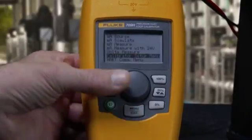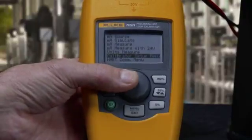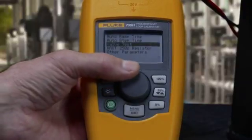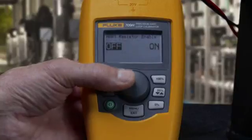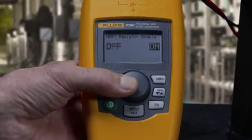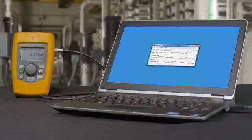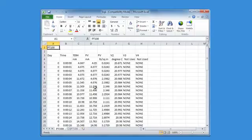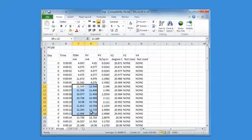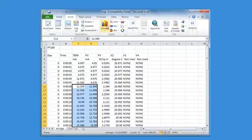There's also a selectable 250 ohm HART resistor. Another unique feature in the 709H is the logging feature. Working with the optional 709Track software, you can log both the measured milliamp values and the HART parameters in a smart transmitter over time.